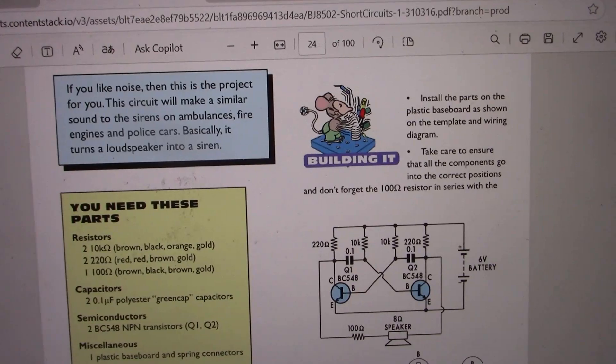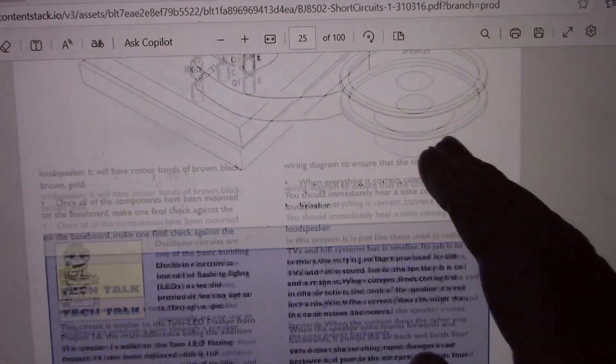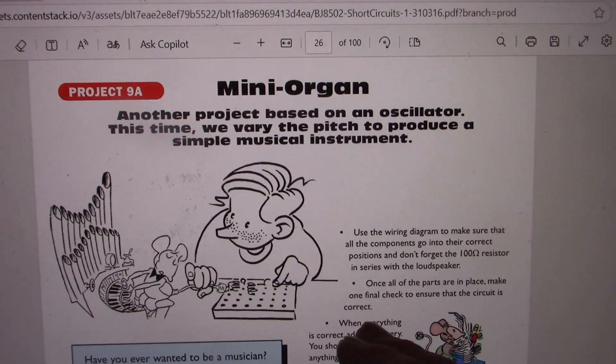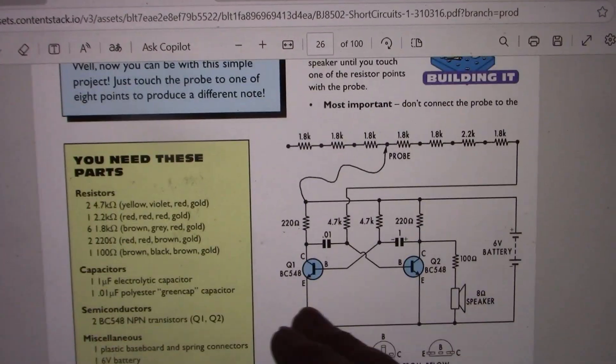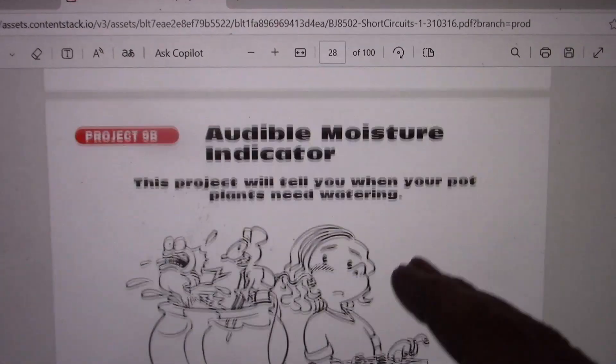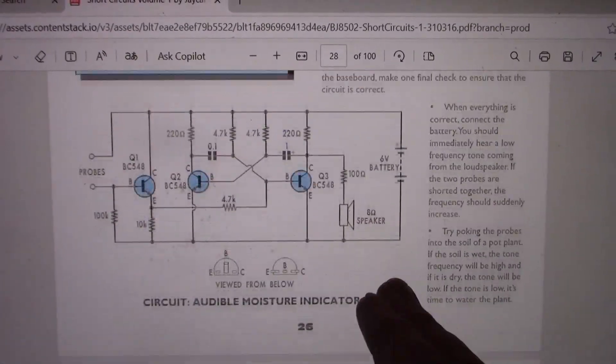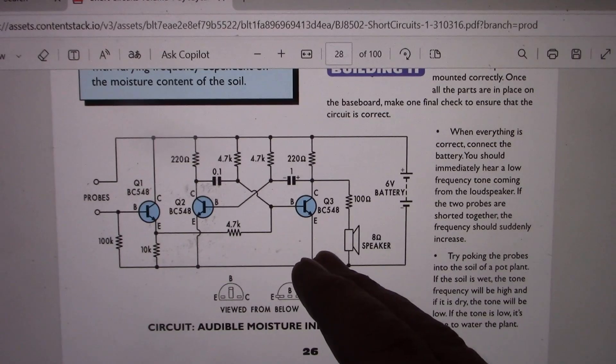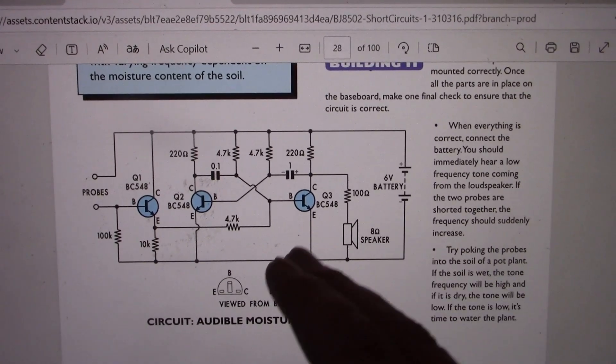Siren - that was or at least quite similar. Mini organ, very similar circuit to the Funway design. Moisture indicator - this is a bit more complex, I think the Funway version was just an LED.